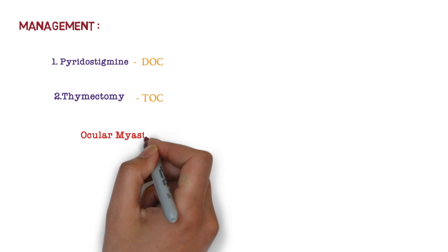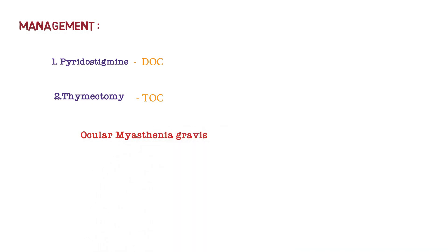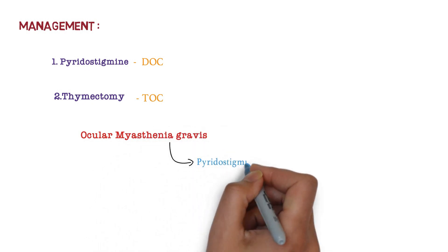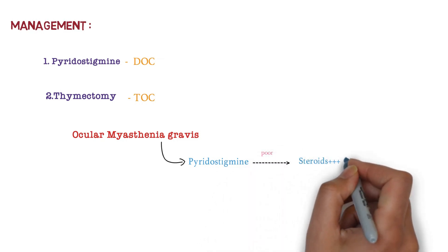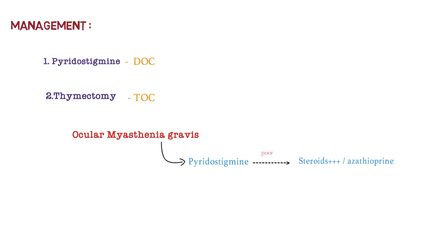If patient is having ocular myasthenia gravis, then first line drug is pyridostigmine. If the response is poor, then go for steroids or azathioprine. So the treatment of choice for ocular myasthenia gravis is steroids.